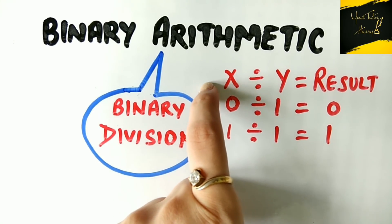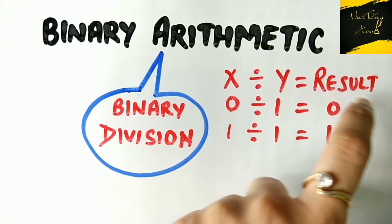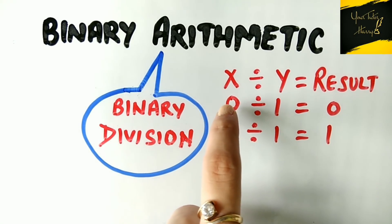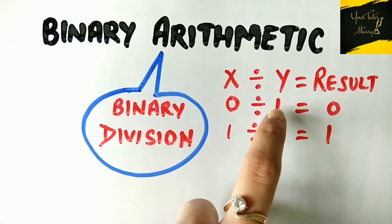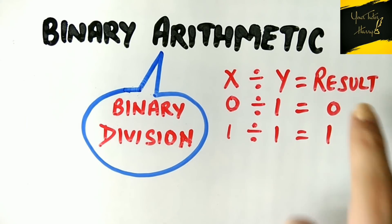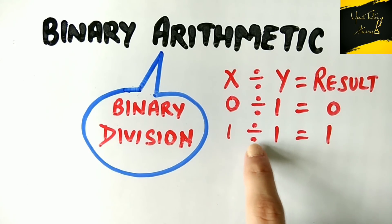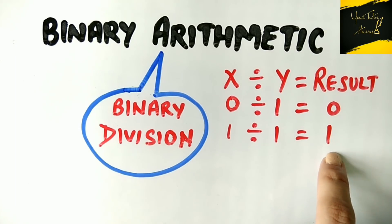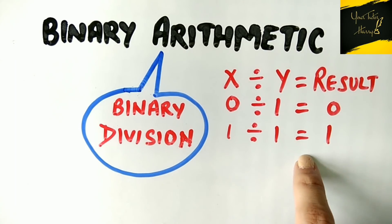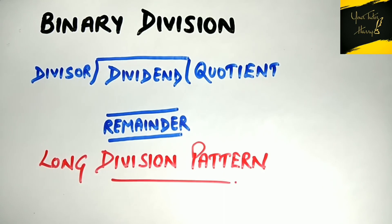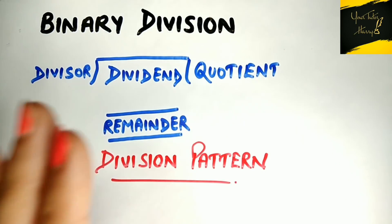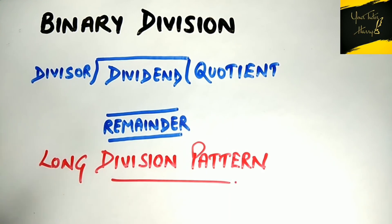For binary division, there will be only two digits, either 0 or 1. So x divided by y: if 0 is divided by 1 we get result 0, and if 1 is divided by 1 we get result 1. Binary division is probably the hardest of the four basic arithmetic operations. Let's have a look at an example in the next slide.